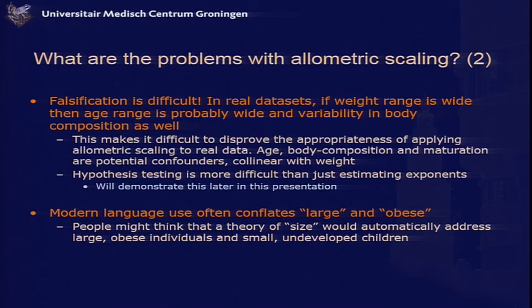A hypothesis test is more difficult than just estimating exponents. Another difficulty is that modern language — the way we talk about size — is unnatural when you try to look at the math of how West describes size. We talk about 'allometric scaling corrects for size,' and people automatically think it works well for large obese people. Well, obesity is body composition. Or they ask: does it work for very small children? Small children might be immature. So that's a language issue that's sometimes more difficult than it appears superficially.